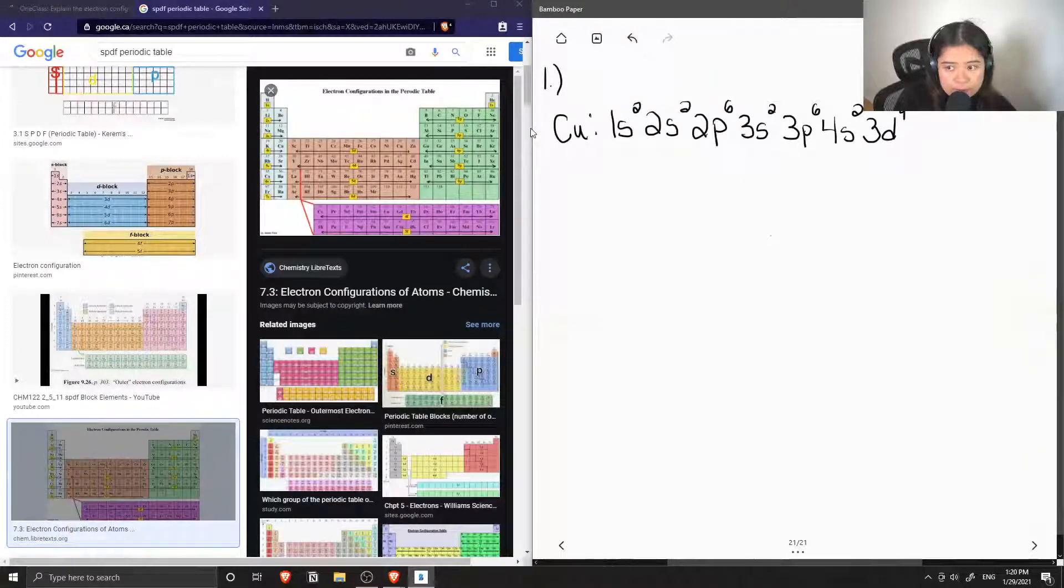So here we have the initial electron configuration for copper.